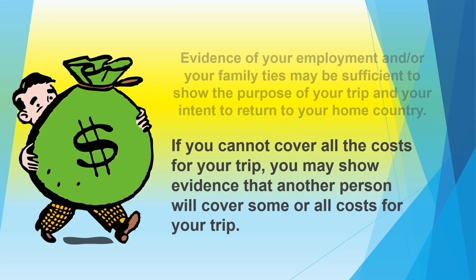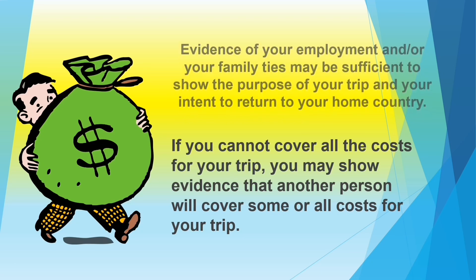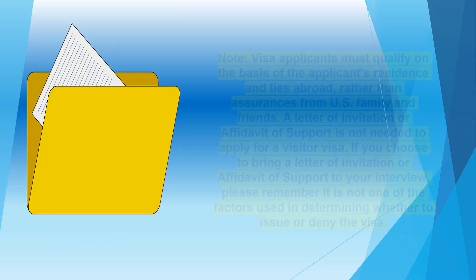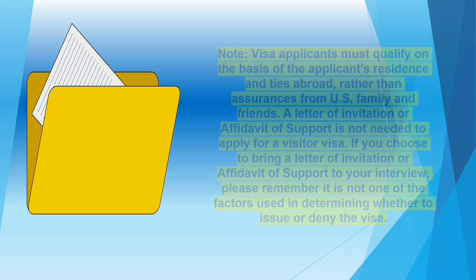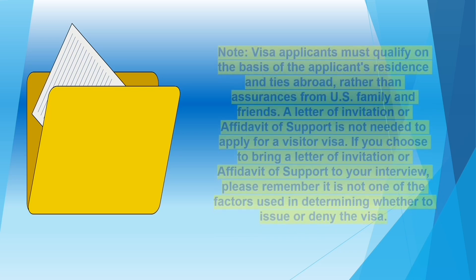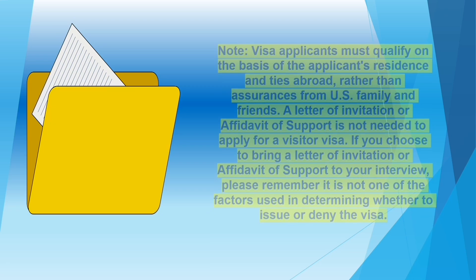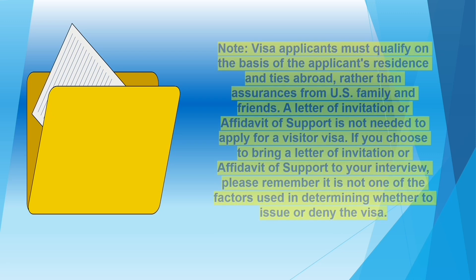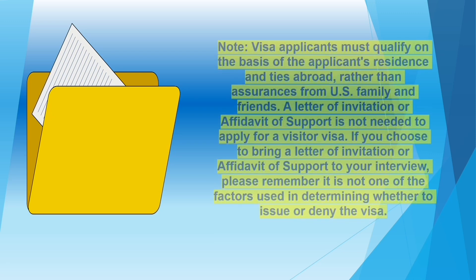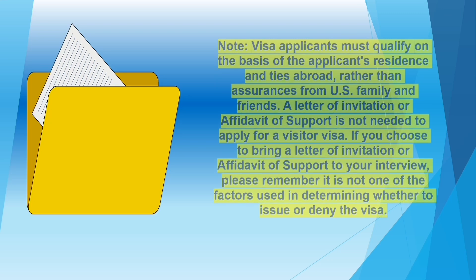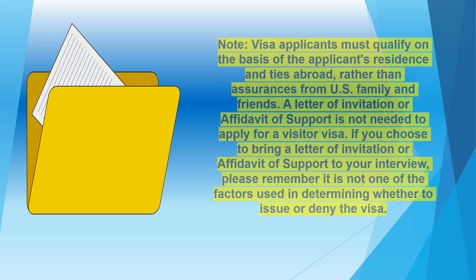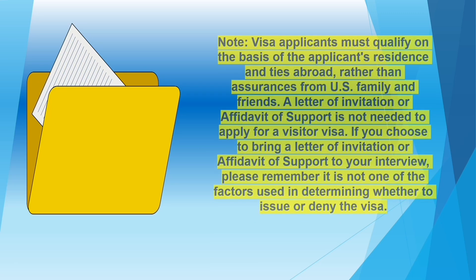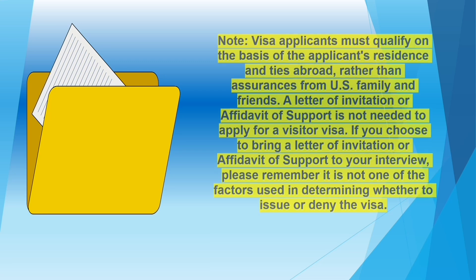Evidence of your employment or family ties may be sufficient to show the purpose of your trip and your intent to return. If you cannot cover the cost of your trip, you may show evidence that another person will financially shoulder your trip. Visa applicants must qualify on the basis of residence and ties abroad rather than assurances from U.S. family and friends. A letter of invitation or affidavit of support is not needed — and if you choose to bring one, it is not a factor used in determining whether to issue or deny the visa.